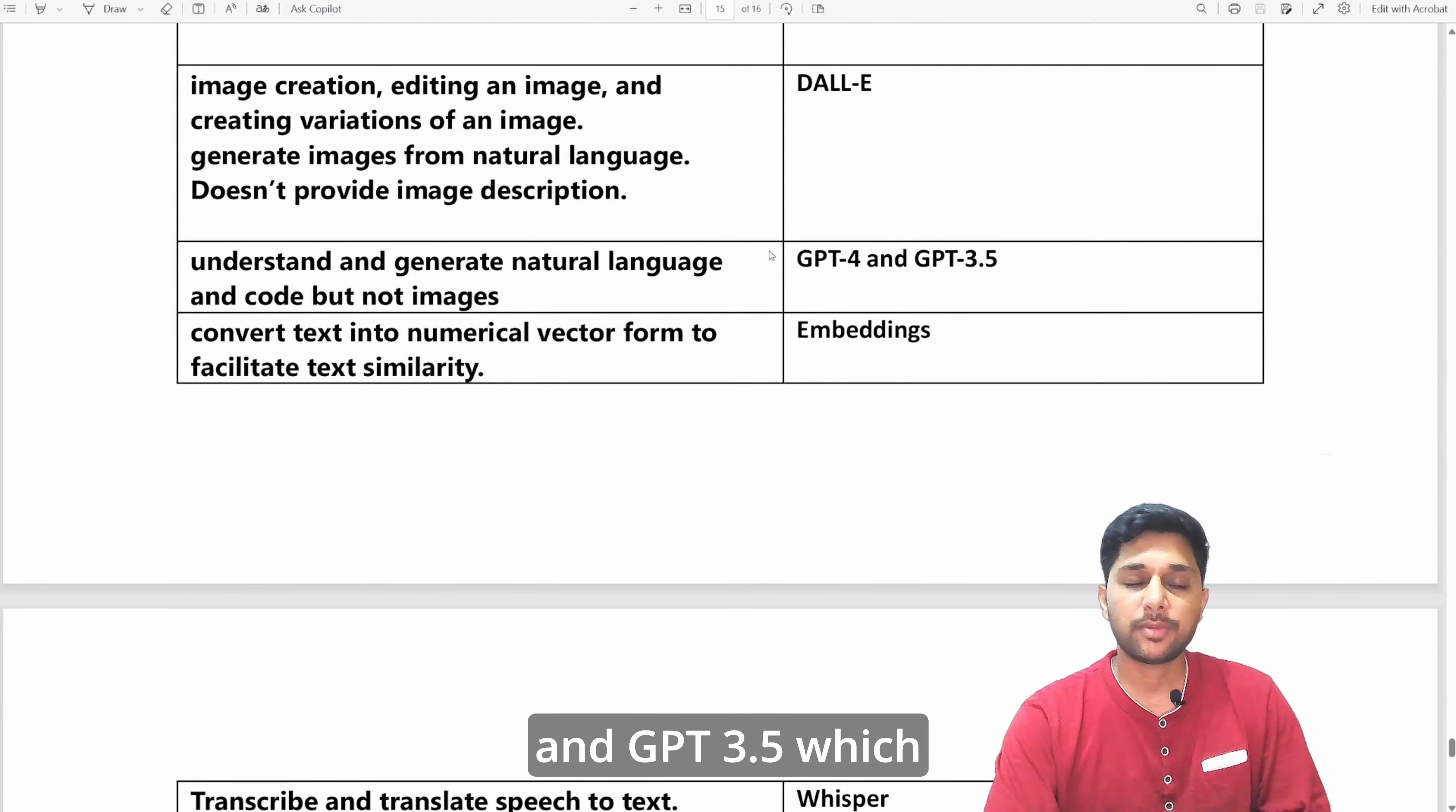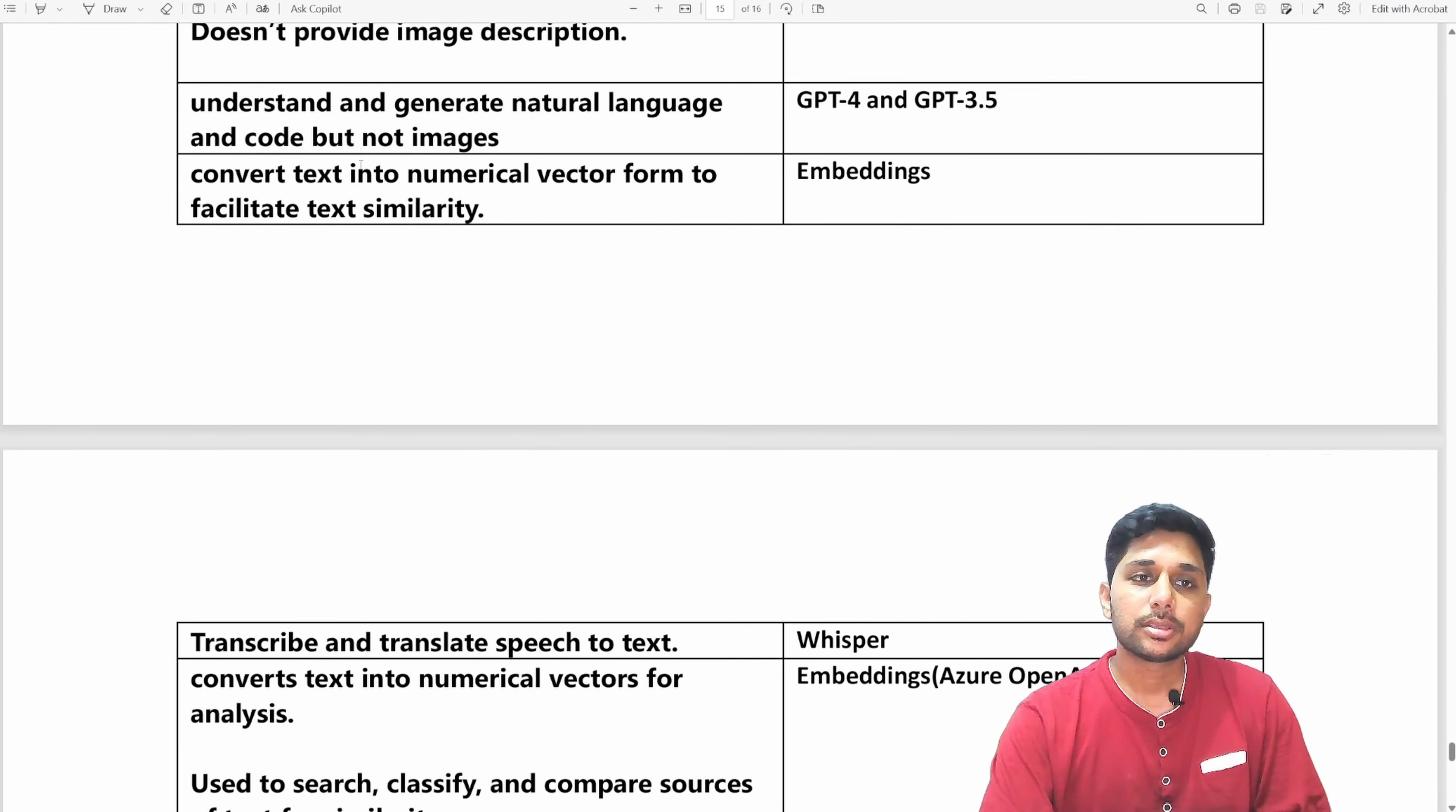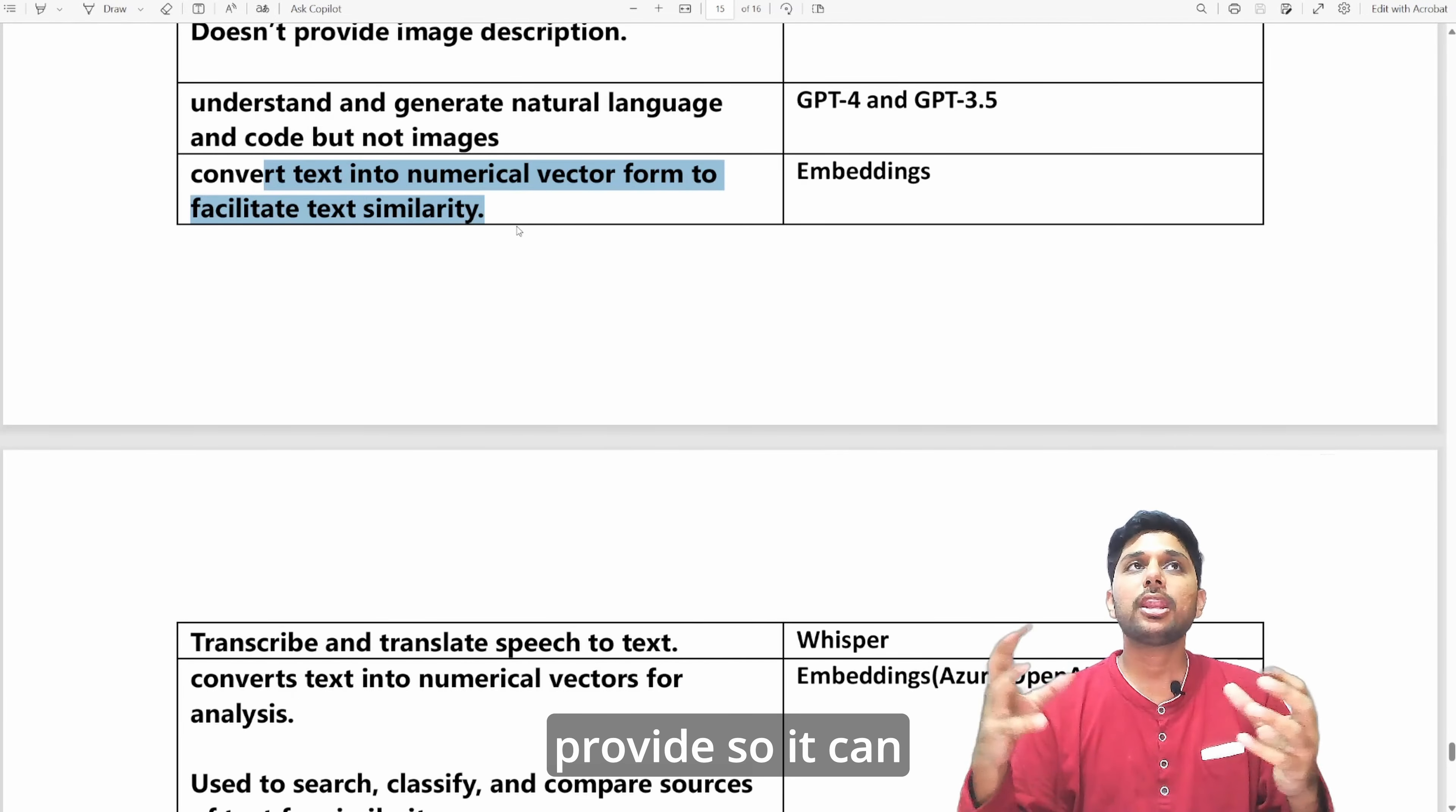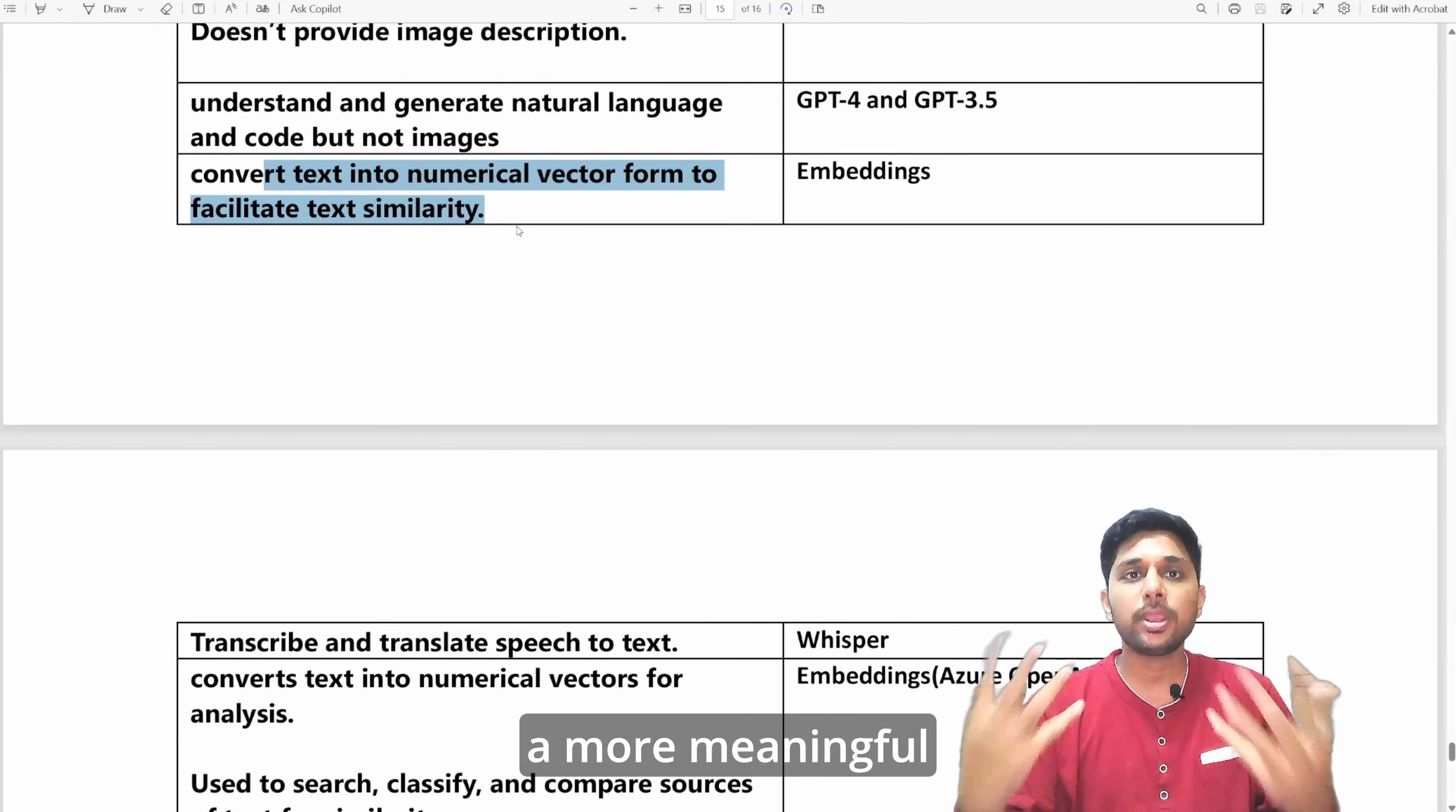What is embeddings? Embeddings is basically converting text into numerical vectors to facilitate text similarity. It can give you semantic meanings, we already talked about in the previous settings, but it generally provides so it can relate when it is asking this, it can point to that vector and it can give you a more meaningful answer using those embeddings.